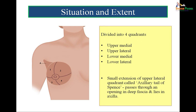The breast can be divided into four quadrants: the upper lateral quadrant, the lower lateral quadrant, the upper medial quadrant, and the lower medial quadrant. Out of these quadrants, the upper lateral quadrant gives an extension which passes through the deep fascia and goes into the axilla — that is called the axillary tail of Spence, marked by A in the figure. The four quadrants are marked by 1, 2, 3, and 4.